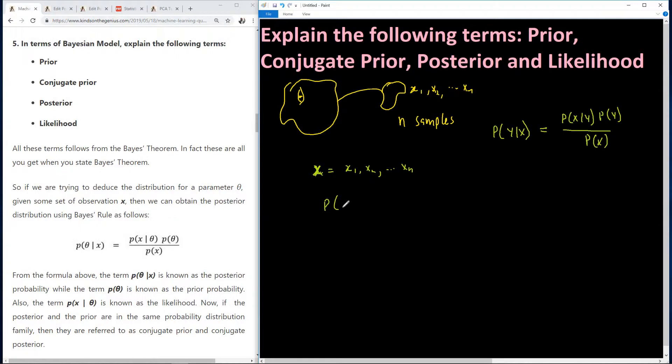P of theta. P of theta given x. This time we are using x as a vector, as a set of x. So it's going to give us P of x given the parameter theta, times the probability of the parameter, all over P of x.